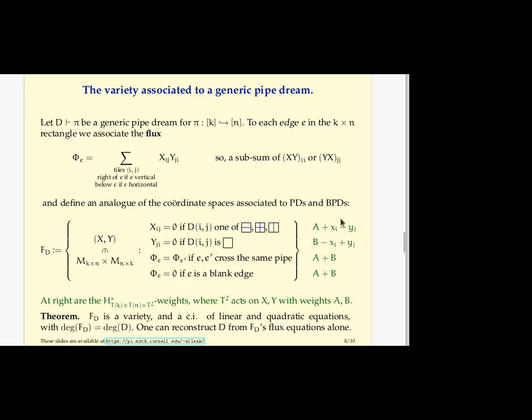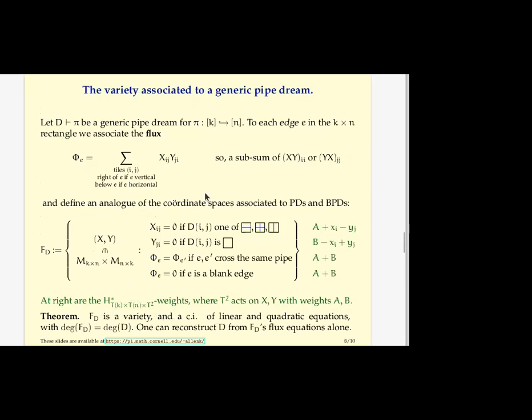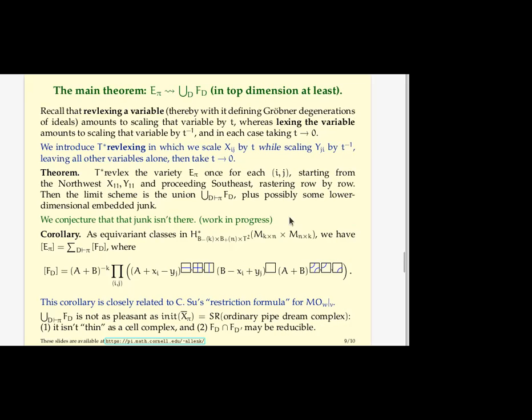They are still at least complete intersections. So the degrees of them are just two to the number of quadratic equations that are involved. And if you want better than just the degree you want the equivariant cohomology class, then these are the factors you're going to end up multiplying. So the A here is about scaling the X variables. The B here is about scaling the Y variables. If you scale an X variable times a Y variable times the conjugate Y variable, then you get A plus B. All right. So I've already I think warned you about what the main theorem is going to be, which is we take this guy E_pi and we do this degeneration of it. That's lexing in one coordinate while revlexing in the dual coordinate. And so that's doing the pipe dream degeneration on the X side, while it's doing the bumpless pipe dream degeneration on the Y side. And we prove that when we're done we get this union of these components.